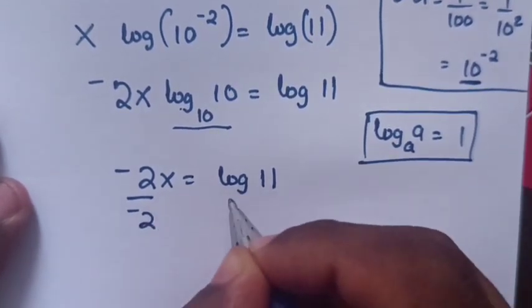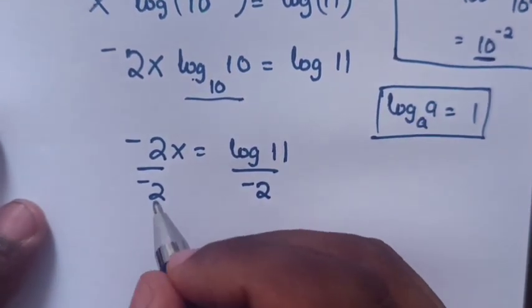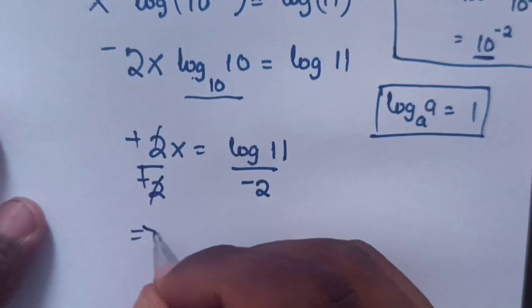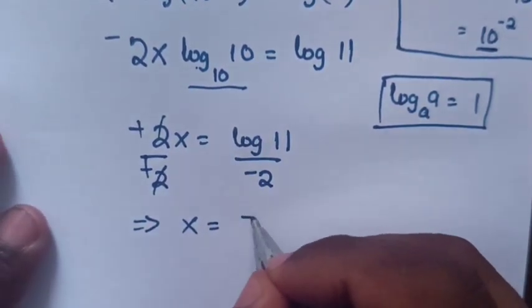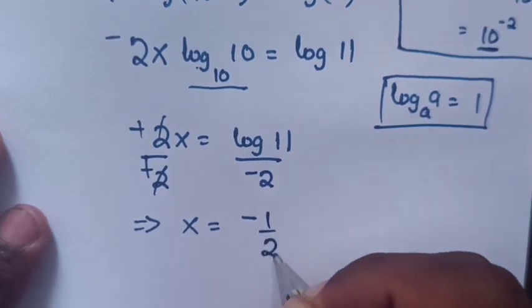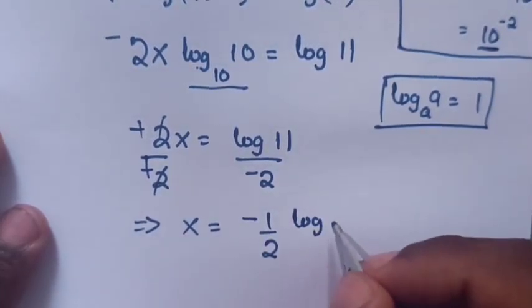Then we divide by -2 on both sides. This will cancel on the left, so x = (-1/2)·log(11).